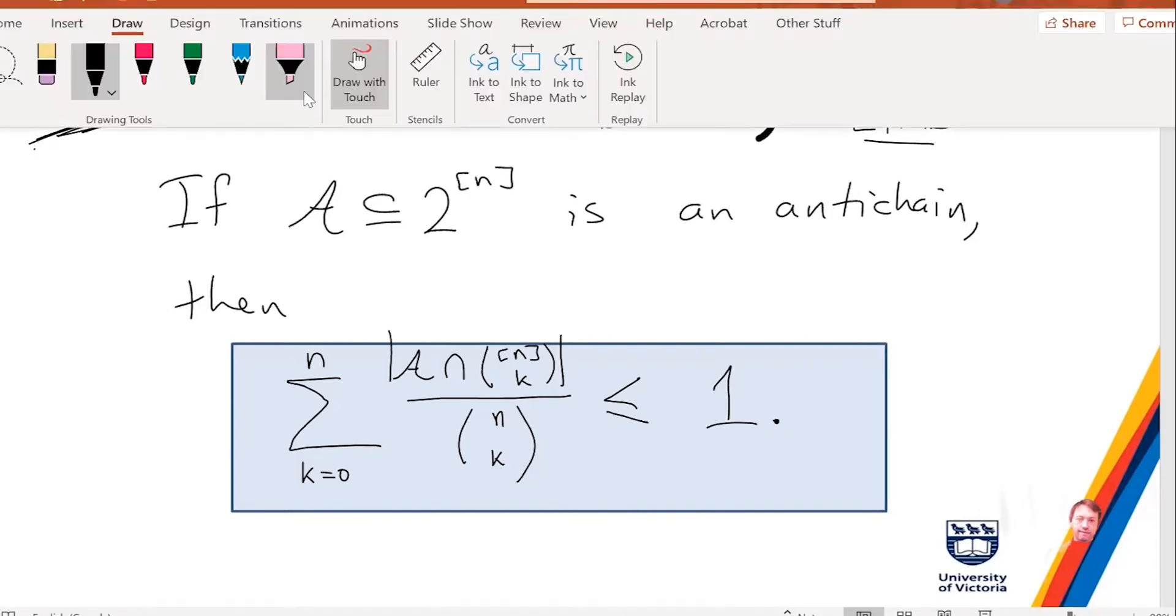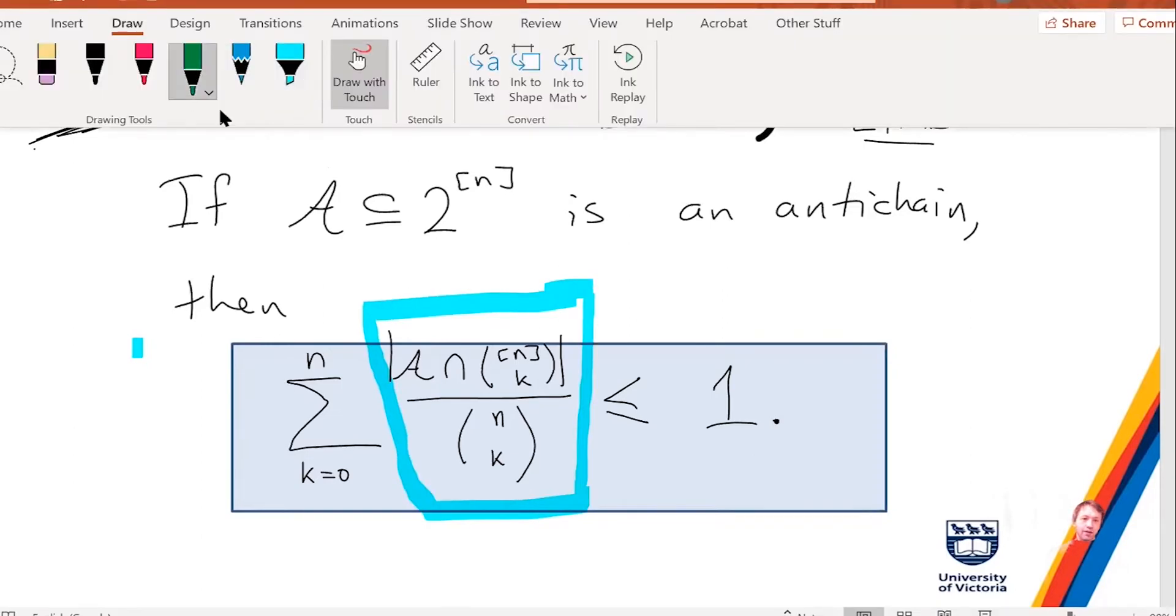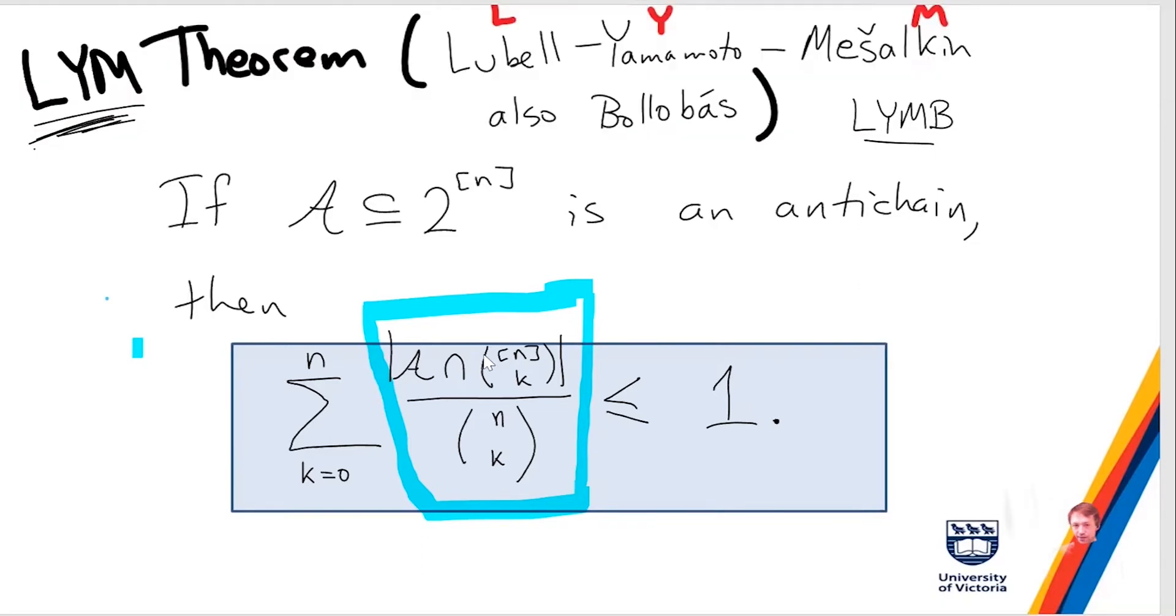So how do you interpret this? So what is this quantity inside the sum for a given k? Well, for a given k, it's the number of sets of size k that are in A divided by the number of sets of size k that exist in the whole universe, right? It's n choose k. So this is like the percentage. You can think of the percentage of the sets of size k that happen to be in A.